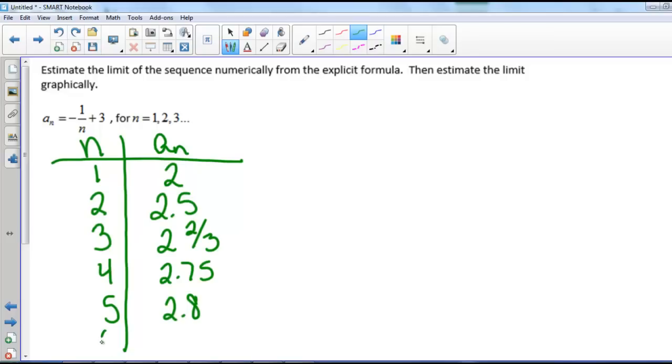If n equals 6, we get negative 1 sixth plus 3, so that's 2 and 5 sixths. If we look at 7, we have 3 minus 1 seventh, so that's 2 and 6 sevenths.